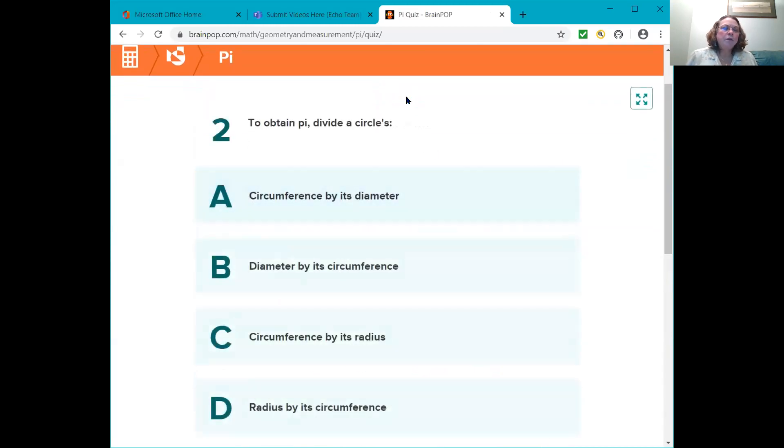Question two. To obtain Pi divide a circle's A circumference by its diameter, B its diameter by its circumference, C its circumference by its radius, or D its radius by its circumference. I hope you took some good notes. And to obtain Pi you divide a circle's circumference by its diameter.